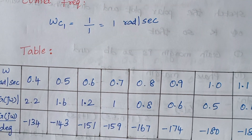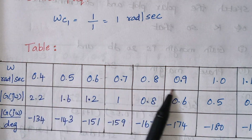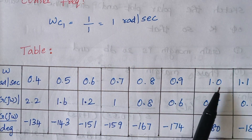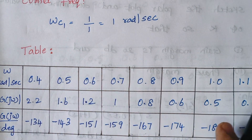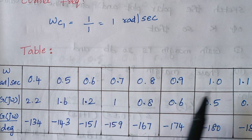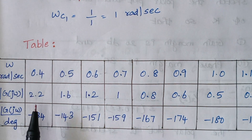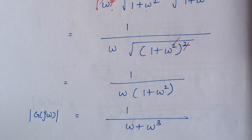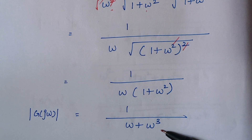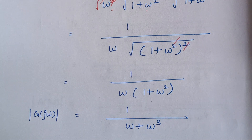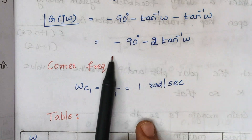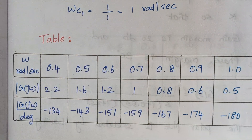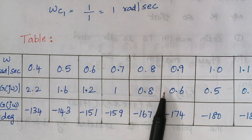Now we frame a table listing frequencies. You can choose frequency values as you wish, but you must include the corner frequency — here it is 1. I included 1 and took all lesser values and one greater value. Substituting different values of omega into the magnitude expression and the phase angle expression, we fill out the table with corresponding magnitudes and phase angles.